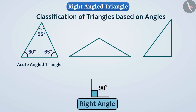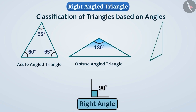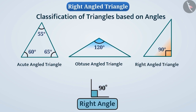And if any one of the angles of the triangle is greater than the right angle, then we call it an obtuse angle triangle. But if any one angle of the triangle is a right angle, then such a triangle is called a right angle triangle.